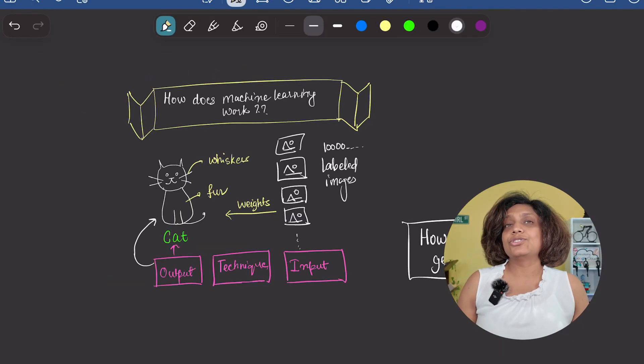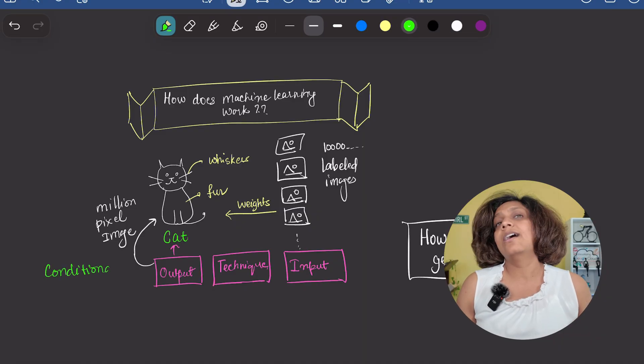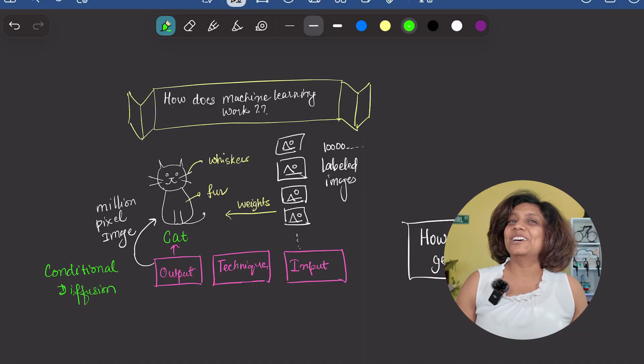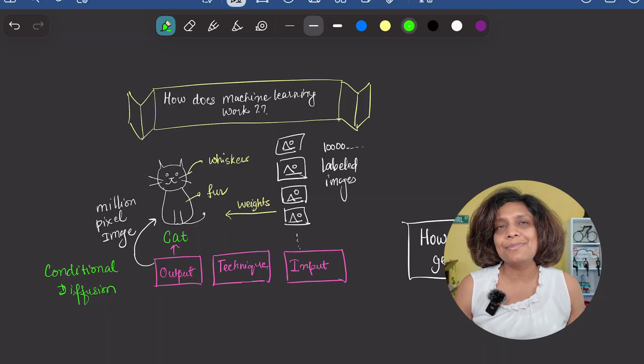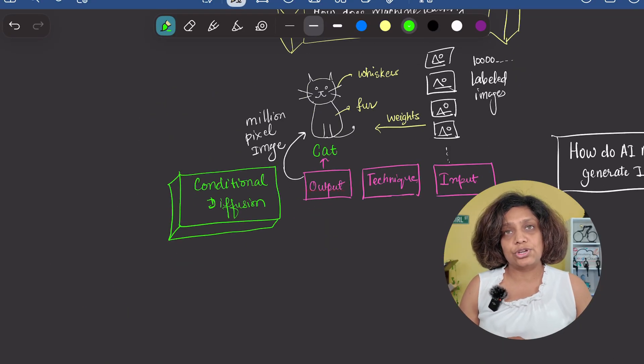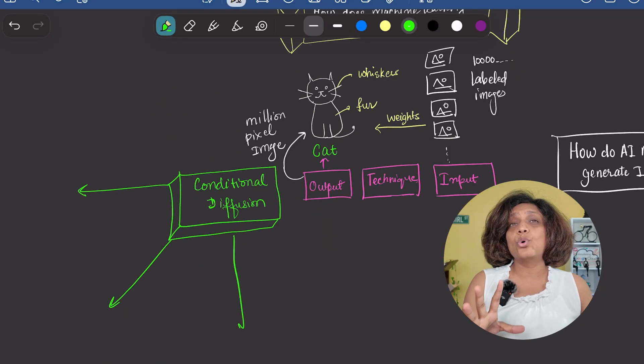But with image generation, the output isn't just one word. It's a million pixel masterpiece. How is that possible? The answer is a brilliant method called conditional diffusion, which is built on four key ideas.